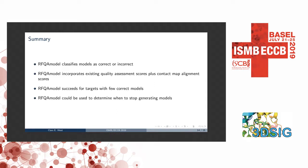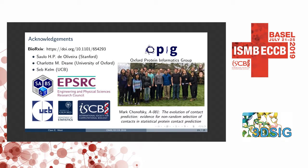In summary, we developed RFQAmodel, which classifies individual models as correct or incorrect — slightly different from existing model quality assessment methods that tend to estimate absolute or relative quality. It incorporates existing quality assessment scores as well as contact map alignment scores. It appears to succeed for targets even when there are only a few correct answers in the ensemble, and it could be used to determine when to stop generating models, making the whole process more computationally efficient. The preprint is on BioArchive. Thank you to my supervisors Saulo and Charlotte, my industrial partners at UCB, all the funding bodies, and my research group OPIG. I also have a poster, and you might be interested in the work by my colleague Mark Chinovsky.